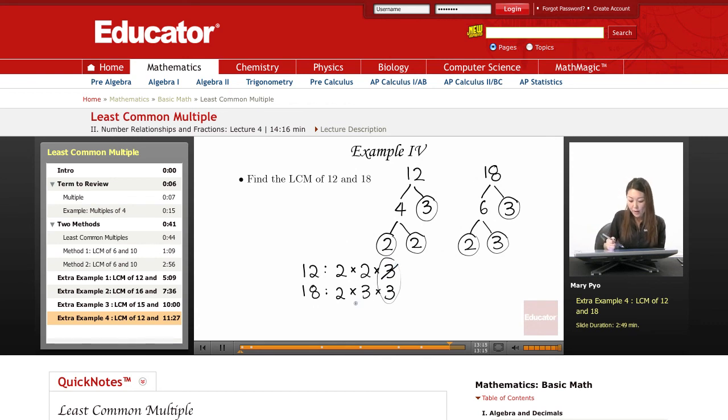Now, I also have a common factor of 2, 2 and 2. So I'm going to take that and cancel one of those out. Even though I have a 2 here and a 2 here, they're within the same number, so I'm not going to cancel that out.